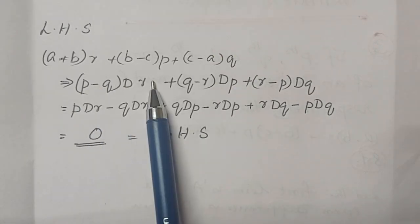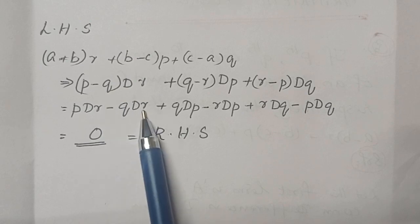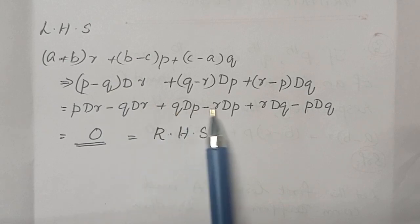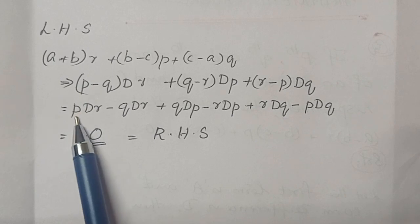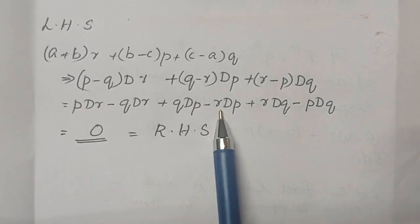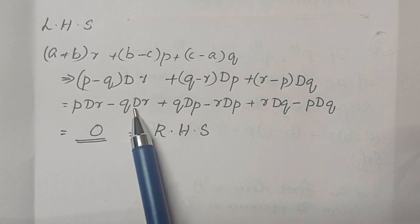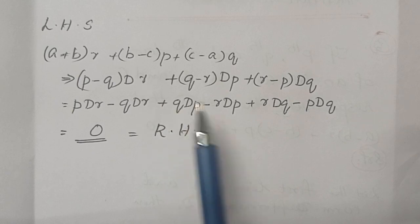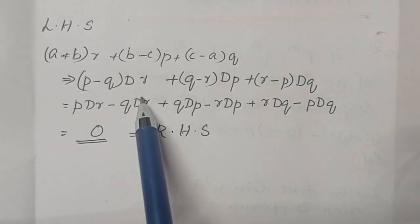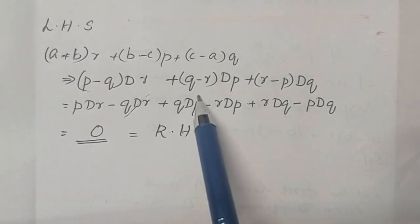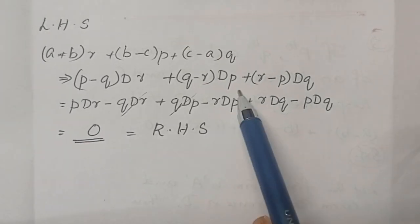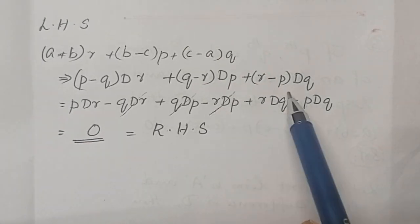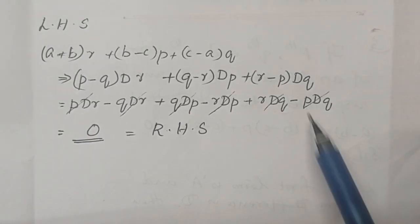Simplifying each term: PR into D minus QR into D plus QP into D minus RP into D plus RQ into D minus PQ into D. Like terms are cancelled. All positive and negative terms cancel out. Now we got the answer as 0.